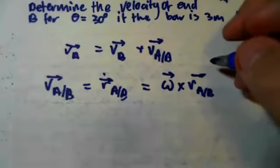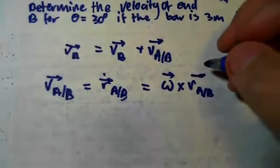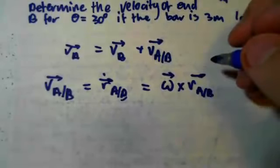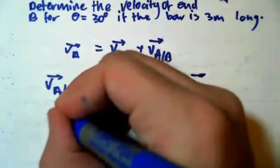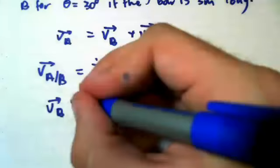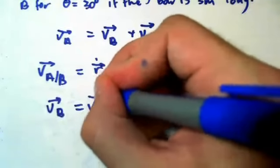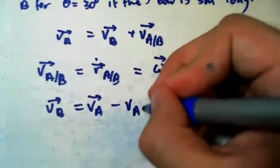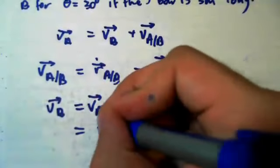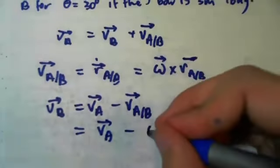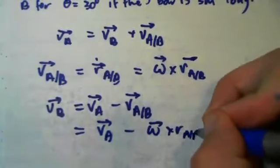Now that means that V of B, if we're going to solve for V of B, V of B equals V of A minus V of A with respect to B, which equals V of A minus Omega cross R of A with respect to B.